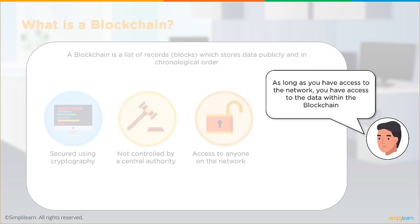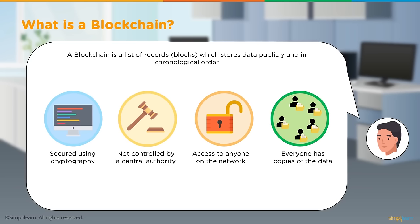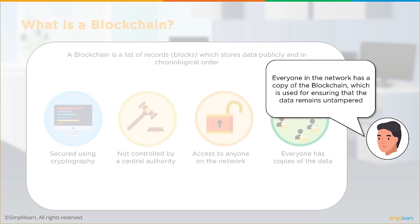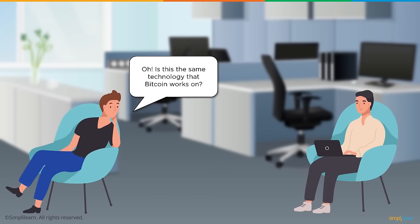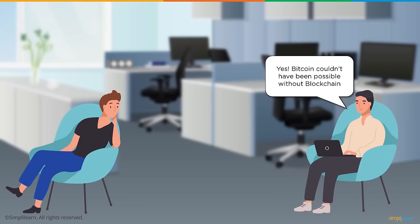Every participant on the blockchain network has the same copy of the ledger as all other participants. If one participant's data gets corrupted, other participants immediately identify the compromised node and rectify it. And yes — this is the same technology Bitcoin works on. Bitcoin could not have been possible without blockchain.